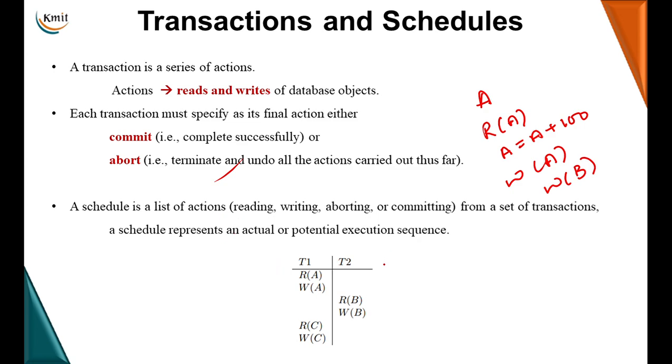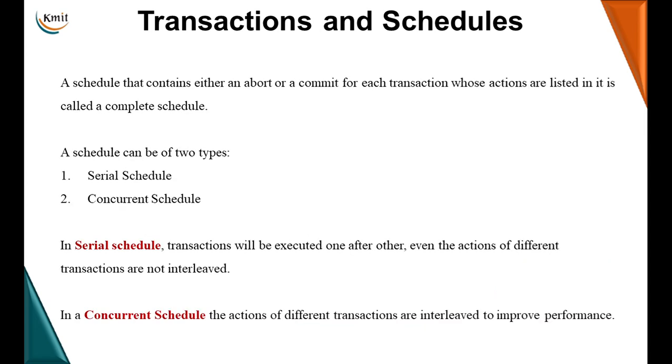Now if you see here, I call this as a transaction or a schedule A where there are two transactions T1 and T2. The actions in the transaction T1 is read and write of database object A and also read and write of database object B. Whereas transaction T2 performs read and write on database object B. If you observe here in this particular transaction, there is no commit or abort. Now whenever a schedule that contains either commit or abort, it is called a complete schedule. Now schedule can be of two types, a serial schedule or a concurrent schedule.